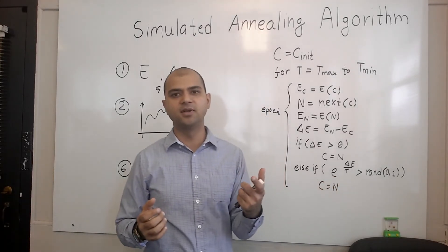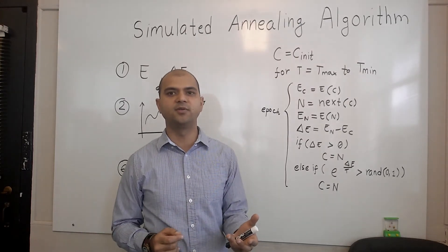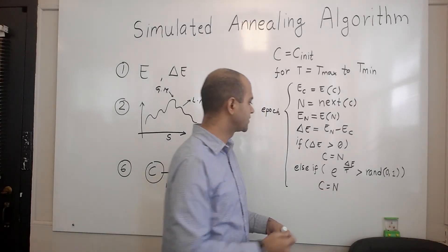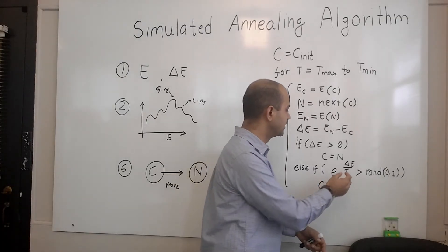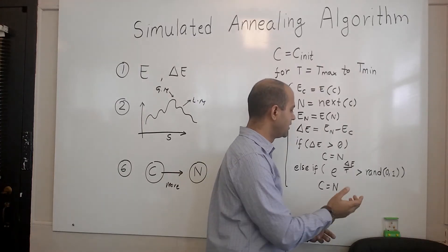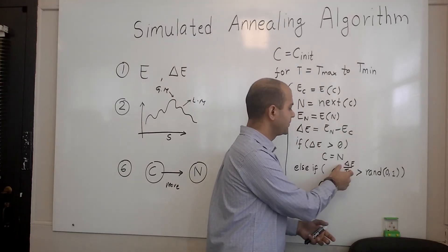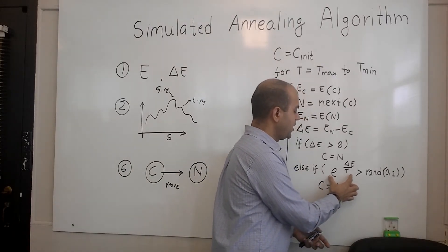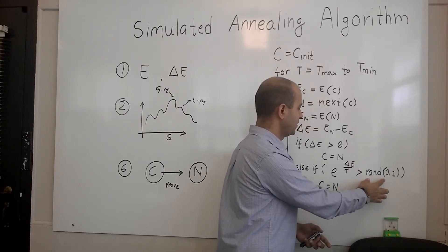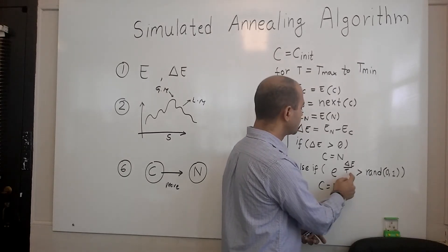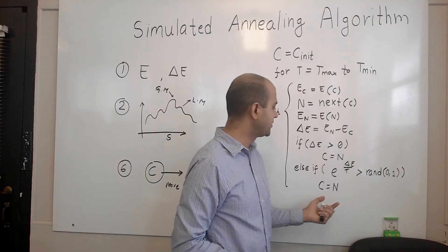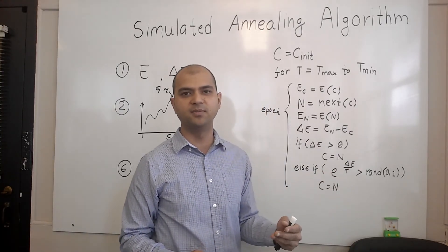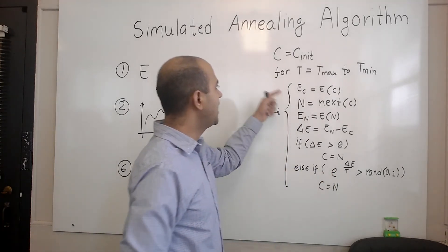At high temperatures, we are exploring the solution space and accepting bad moves as well. When the temperature is low, this probability becomes very low and we rarely accept bad moves. For example, when temperature is very high — say 10,000 — and the change in energy is a normal value like 100 or 10, the exponent computes to a small negative number. E to the power of a small negative number gives something very close to 1, which means a very high probability of accepting the move. We also see that delta E influences it: if the change in energy is very high, we have very low probability to accept the move; when the change in energy is small, we have high probability to accept the move.